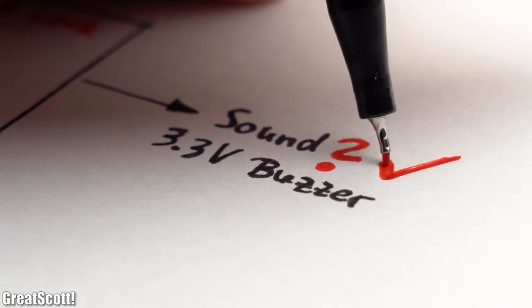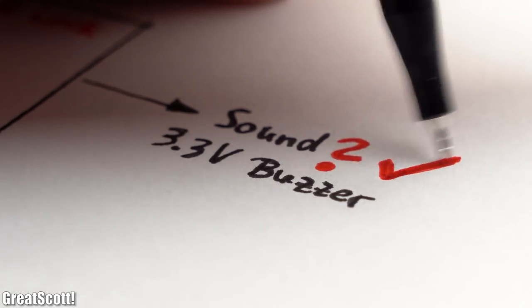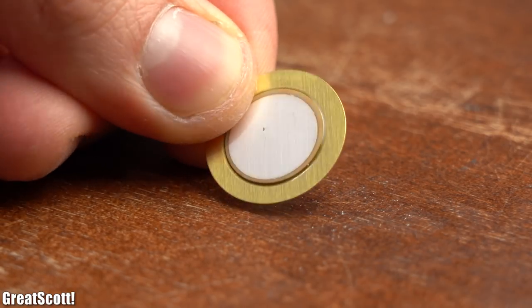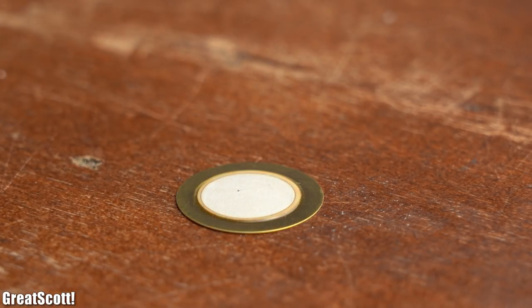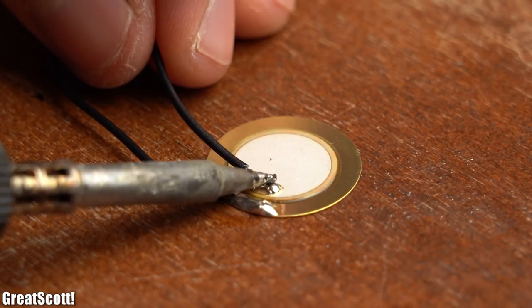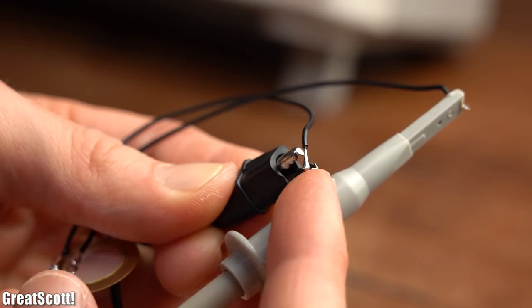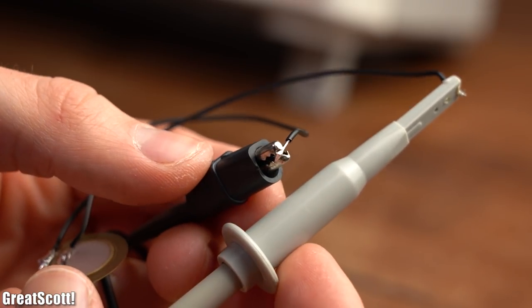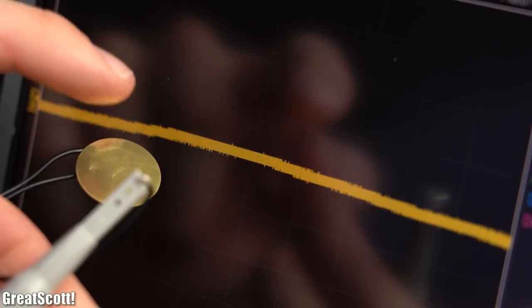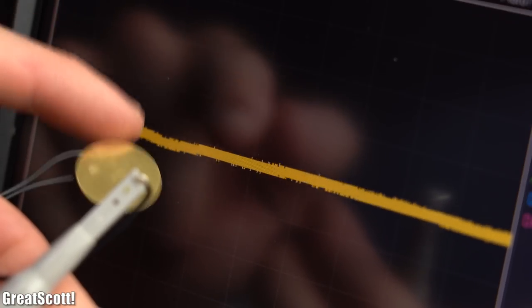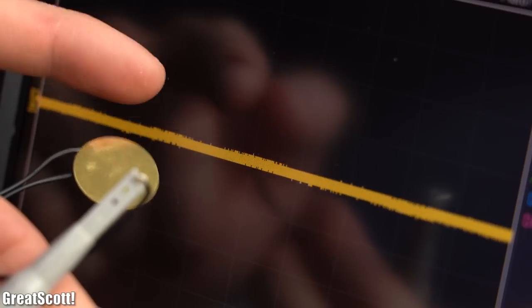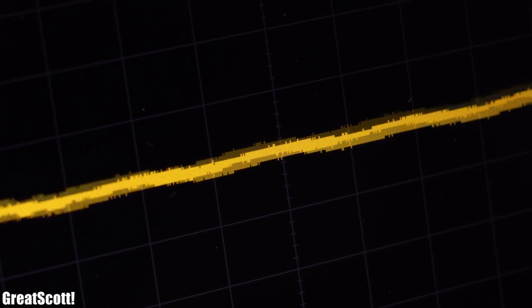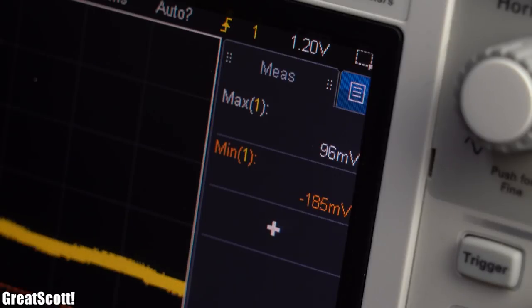And that basically leaves us with the input sensor question, for which I got myself such a piezoelectric disc. After soldering two wires to its two plates and connecting them to the oscilloscope, we can see that the disc does create a recognizable voltage when it is being hit, which we can obviously use to detect shocks.